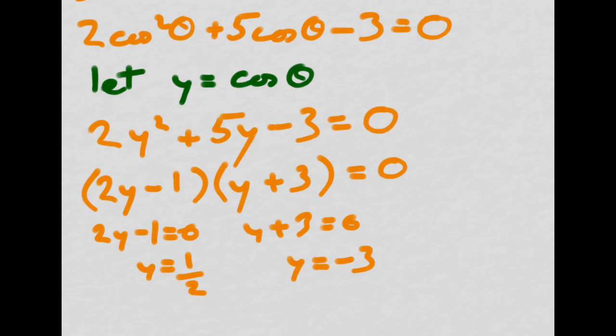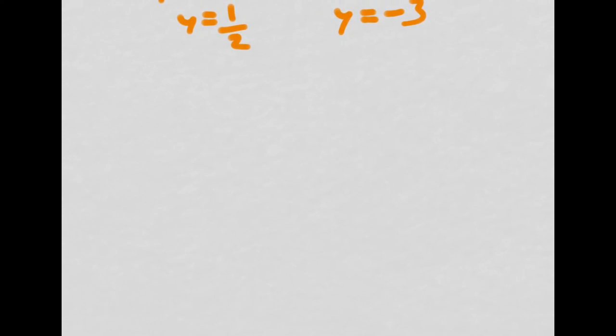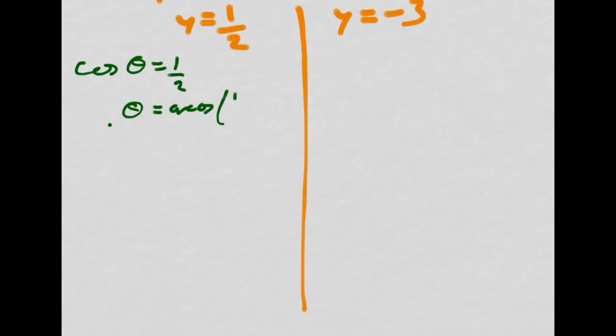Now when I get two answers, what I like to do is split the page in half and solve each one completely separately. So remember that y was actually what I was using to say cosine theta. So I would be the arcosine of 1 half. Sticking that into my calculator gives me one of the solutions 60 degrees.